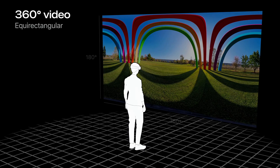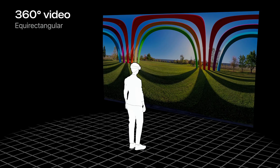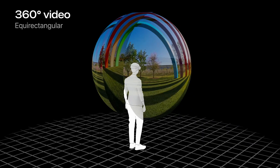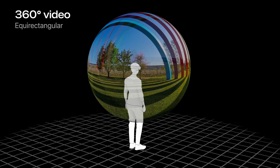This video is mapped onto a sphere around the viewer with an equirectangular projection. This is like how a map of the world is drawn, where the north and south poles are stretched horizontally to show a flat representation of a sphere.